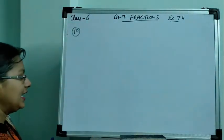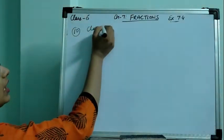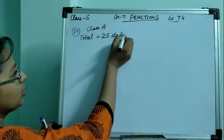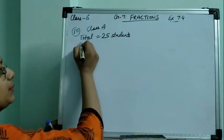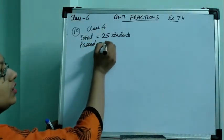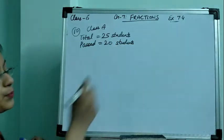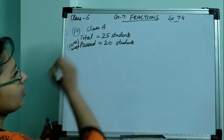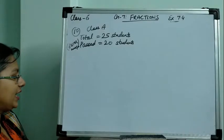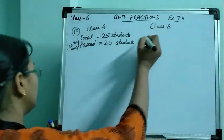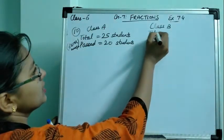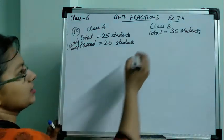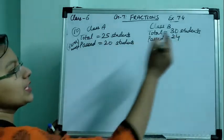In question number 10, the question is: in Class A of 25 students, 20 passed with 60% or more marks. In another Class B, out of 30 students, 24 passed with 60% or more marks. So Class A has 25 total students with 20 passing, and Class B has 30 total students with 24 passing.